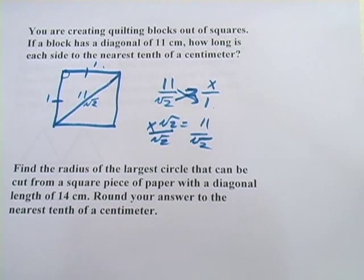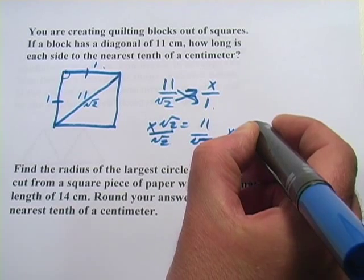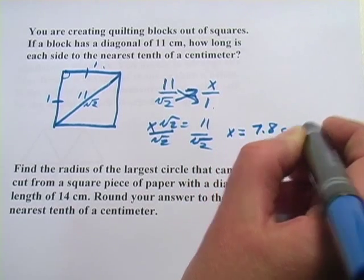And then to solve for x we just divide by the square root of 2. And let me punch that in on the calculator, 11 divided by square root of 2. And I get x equals 7, let's see we're supposed to go to the nearest tenth, so 7.8 centimeters.